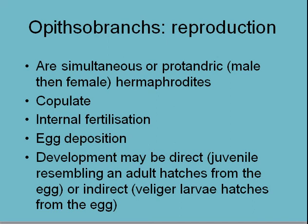These things are either simultaneous hermaphrodites or sequential — first one sex and then the other. They all copulate, they have internal fertilization, and then deposit eggs. Sometimes you'll see these rose-shaped egg cases, and we'll have a look at those in lab or hopefully I can point some out while we're diving — these rose flowers of eggs that you'll come across quite often.